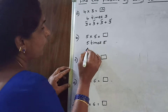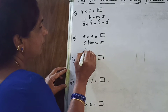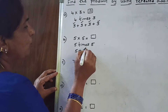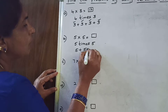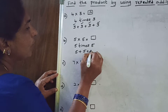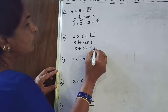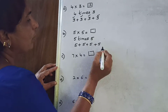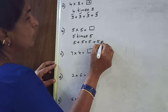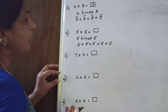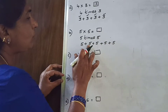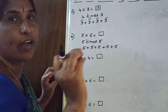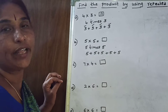So 5 times you have to take it: 1 time plus 2 times plus 3 times plus 4 times plus 5 times. Count: 1, 2, 3, 4, 5. You have to take it 5 times.